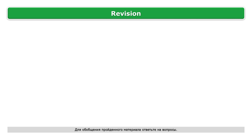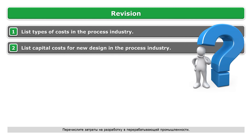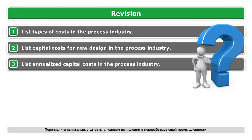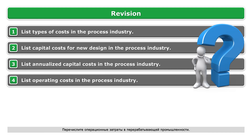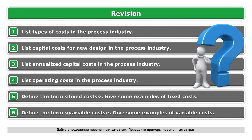To revise the learned material, answer the following questions: List the types of costs in the process industry. List capital costs for new design. List annualized capital costs. List operating costs. Define the term 'fixed costs' and give some examples. Define the term 'variable costs' and give some examples of variable costs.